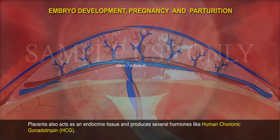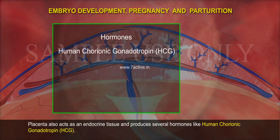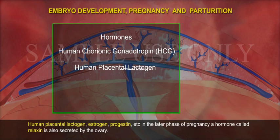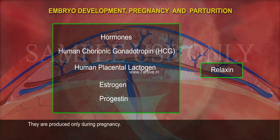The placenta also acts as an endocrine tissue and produces several hormones like human chorionic gonadotropin (HCG), human placental lactogen, oestrogen, progestin, etc. In the later phase of pregnancy, a hormone called relaxin is also secreted by the ovary. These hormones are produced only during pregnancy.